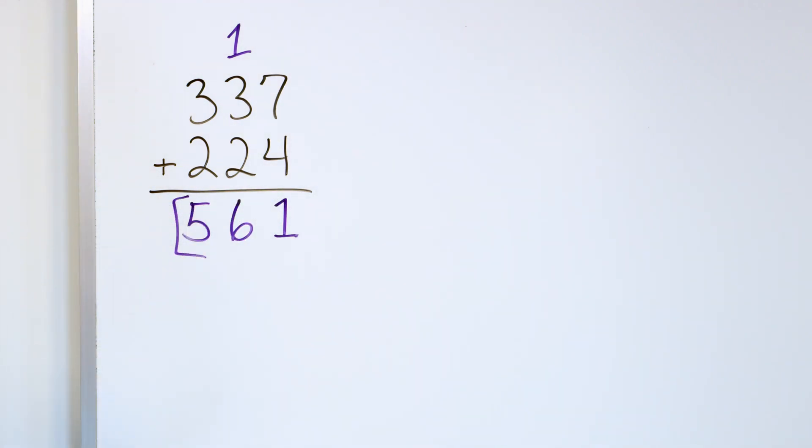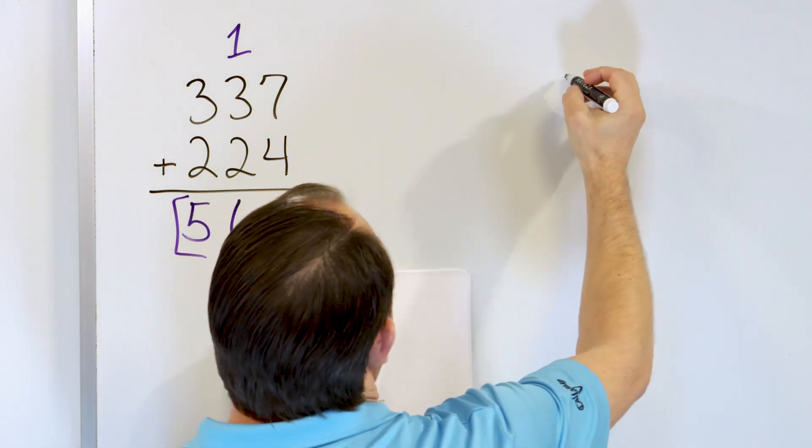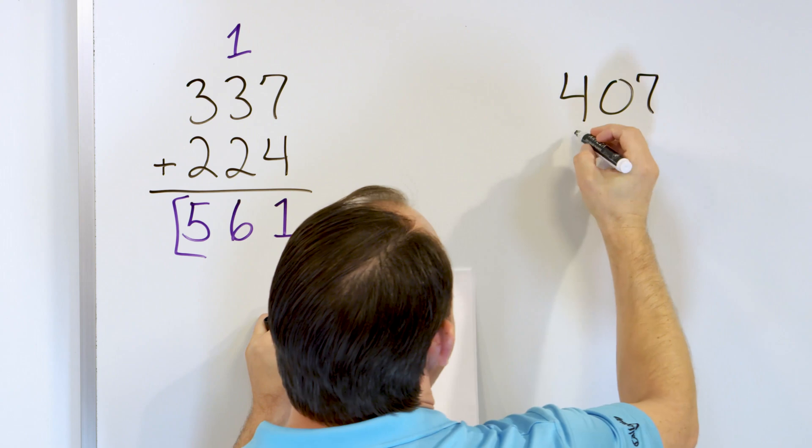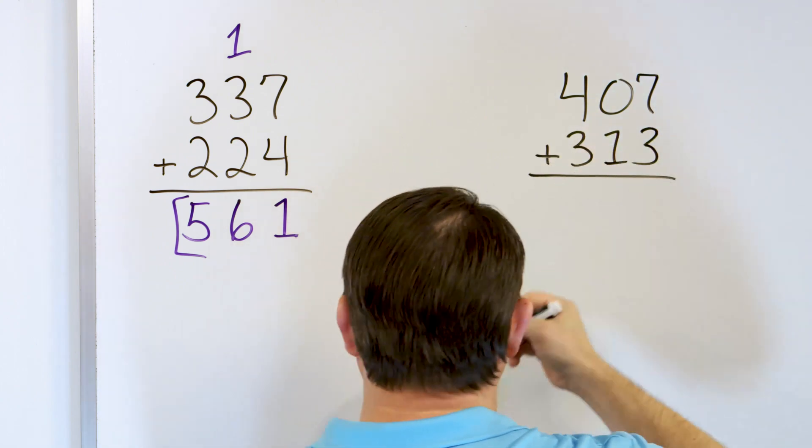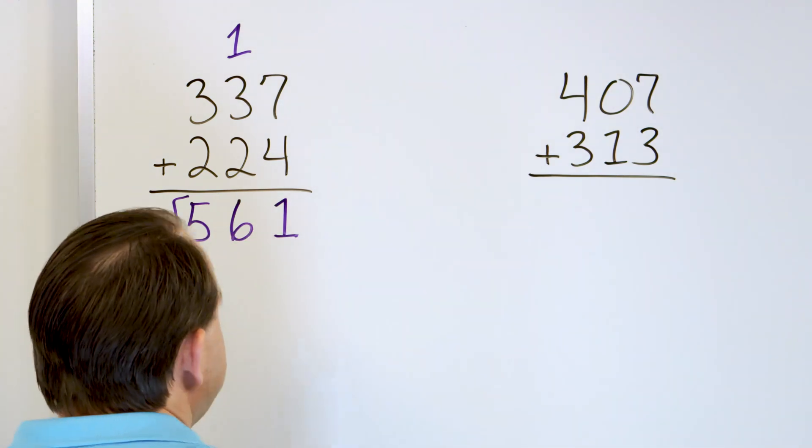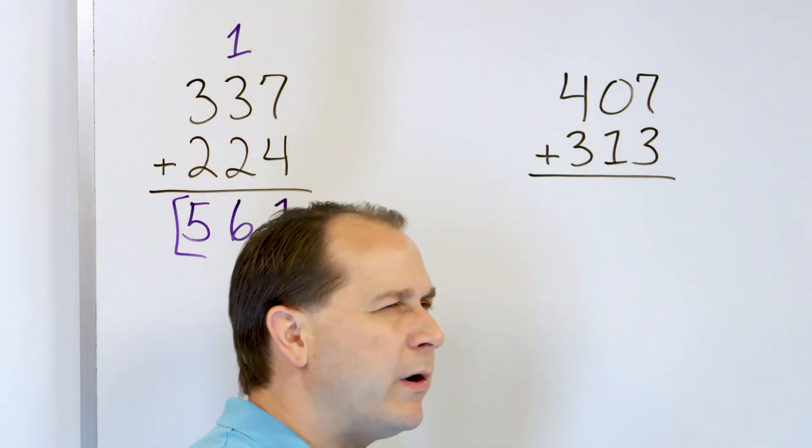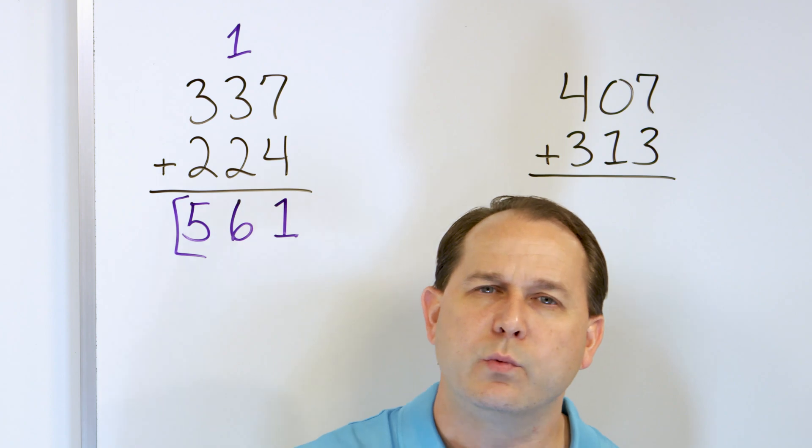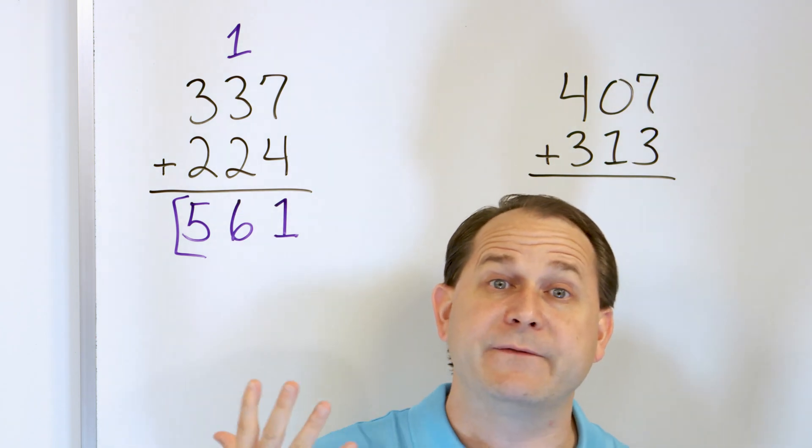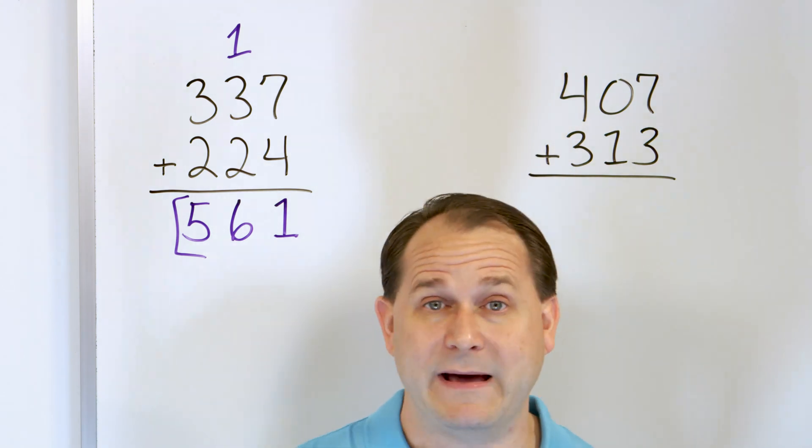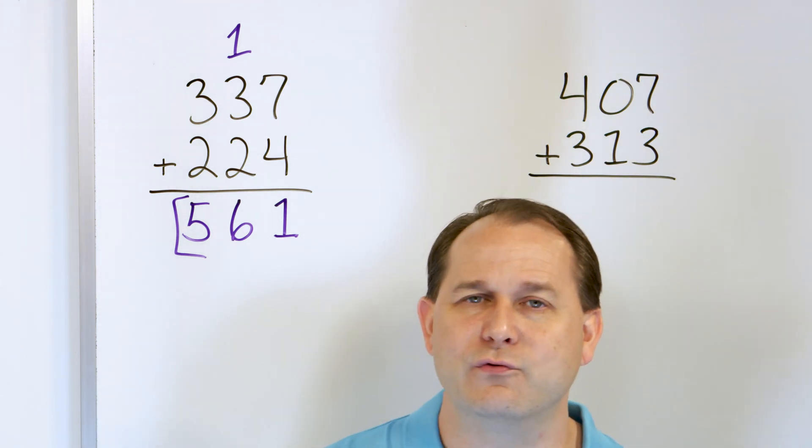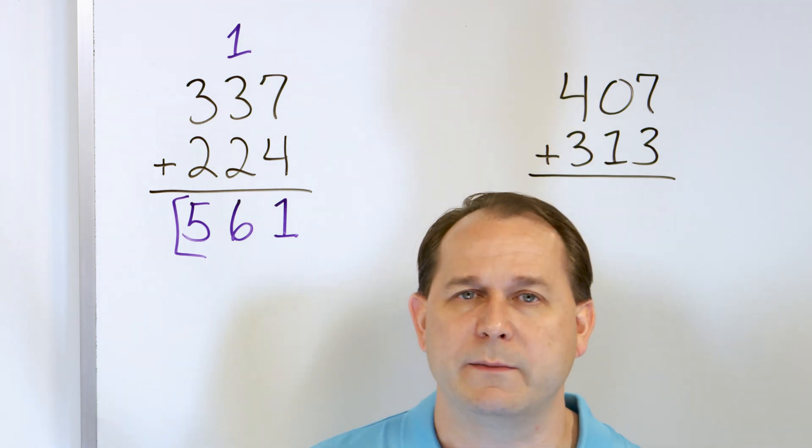So here we have the next problem. Let's take a look at problem number 4. Let's say we have 407, and we'll add to that 313. So here's our first complementary pair. We have 7 and 3, so I want you to remember that makes 10. 5 and 5 make 10, 6 plus 4 makes 10, 7 plus 3 makes 10, 8 plus 2 makes 10, and 9 plus 1 makes 10.